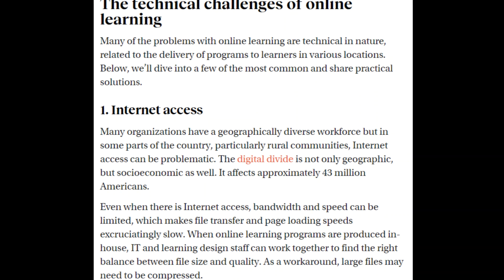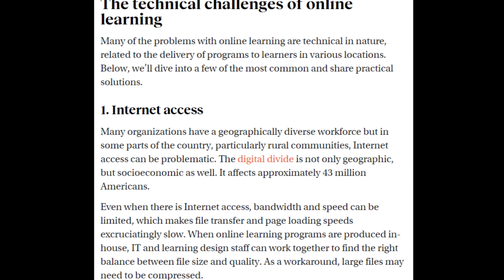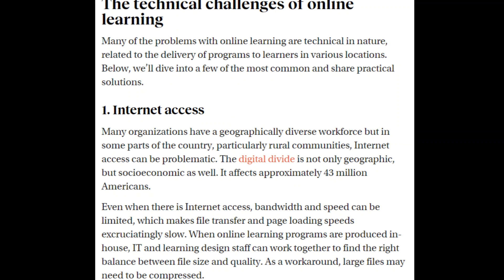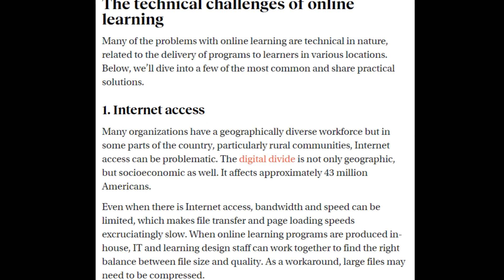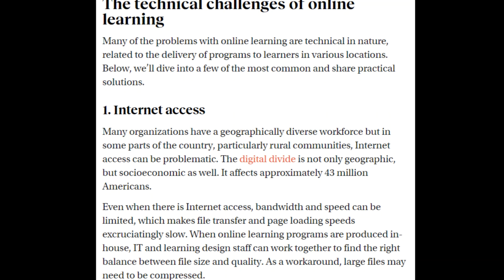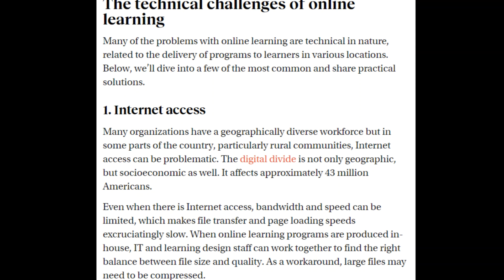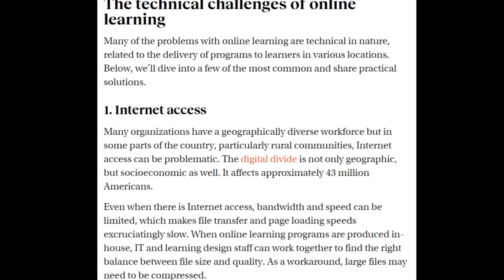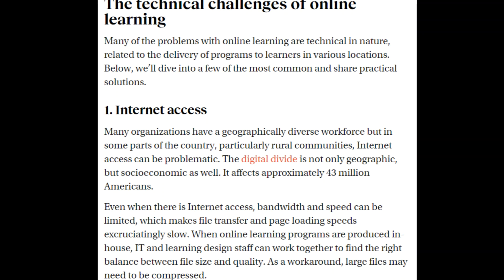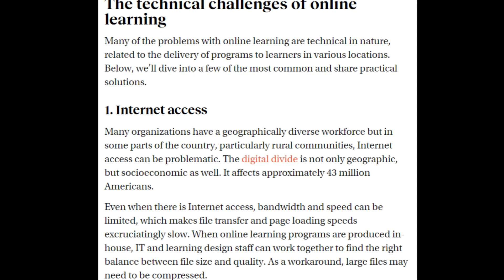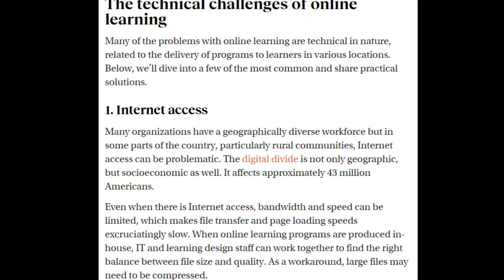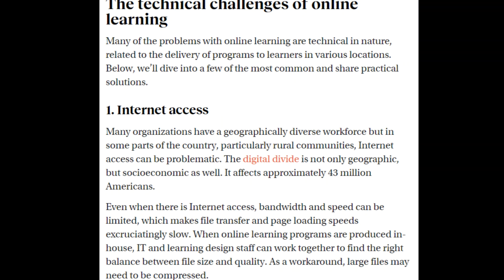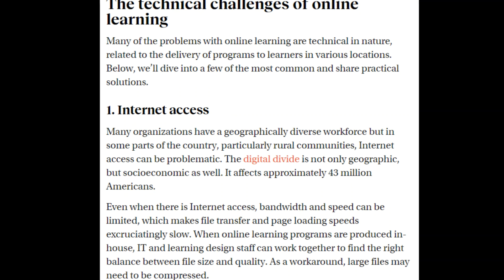1. Internet access: Many organizations have a geographically diverse workforce, but in some parts of the country, particularly rural communities, internet access can be problematic. The digital divide is not only geographic but socioeconomic as well, and it affects approximately 43 million Americans. Even when there is internet access, bandwidth and speed can be limited, which makes file transfer and page loading speeds excruciatingly slow.